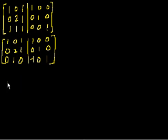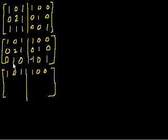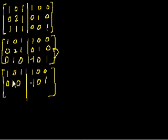Now the third row is 0, 1, 0 | −1, 0, 1 — that looks a lot like what I want for the second row in the identity matrix. So I'll swap rows 2 and 3. Row 1 stays the same: 1, 0, 1 | 1, 0, 0. The new row 2 becomes what was row 3: 0, 1, 0 | −1, 0, 1. And the new row 3 becomes what was row 2: 0, 2, 1 | 0, 1, 0.